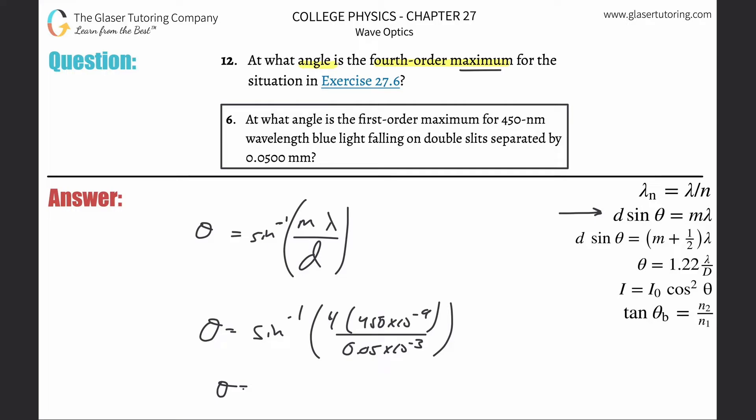Oh boy, so inverse sine of four times 450 times 10 to the minus ninth divided by 0.05 times 10 to the minus three—I'm going to get 2.06 degrees.